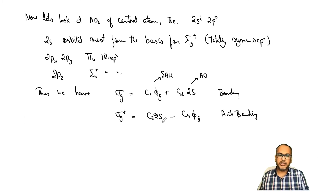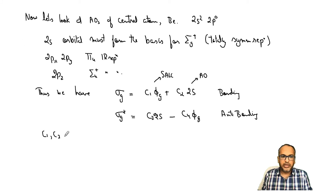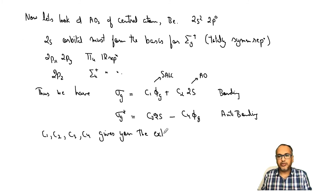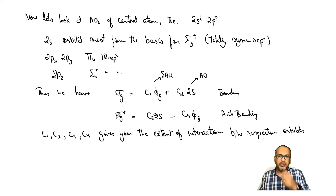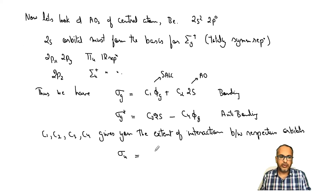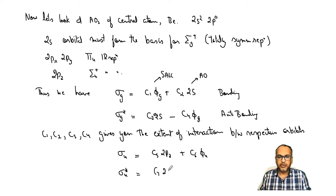The coefficients C₁, C₂, C₃, C₄ reflect the extent of interaction between the respective orbitals — how strongly they are overlapping. Similarly, the interaction between 2pz and φu gives σu = C₅·2pz + C₆·φu for bonding, and σu* = C₇·2pz − C₈·φu for anti-bonding.